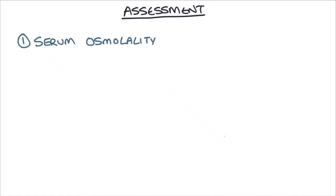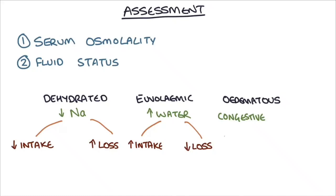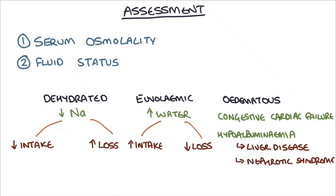So let's say you check the serum osmolality and it's low, suggesting a genuine hyponatremia. The next thing you want to check is the person's fluid status. This involves checking whether they are dehydrated, euvolemic or normally hydrated, or edematous. A dehydrated patient with hyponatremia will have an inadequate amount of sodium, either through inadequate intake or more likely through excessive sodium loss. A euvolemic or normally hydrated patient will have an excessive amount of water diluting the sodium in the blood and causing a dilutional hyponatremia. An edematous patient is likely to have congestive cardiac failure or hypoalbuminemia secondary to liver disease or nephrotic syndrome.